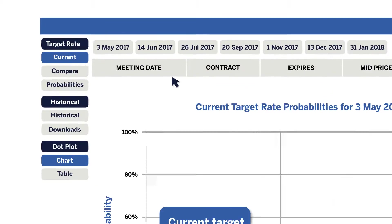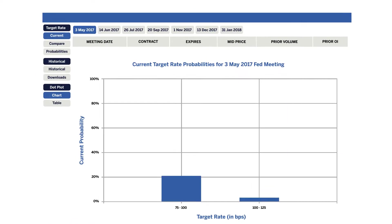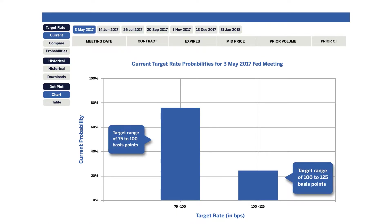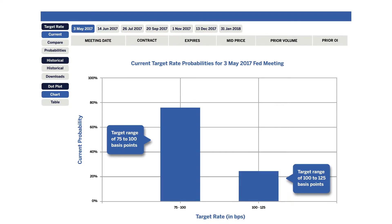Select the tool's output for the nearest meeting, which has two potential outcomes. The bar on the left represents the probability that rates are unchanged, and the bar on the right shows the probability that rates will be increased by a single 25-basis-point increment to a target range of 100 to 125 basis points.